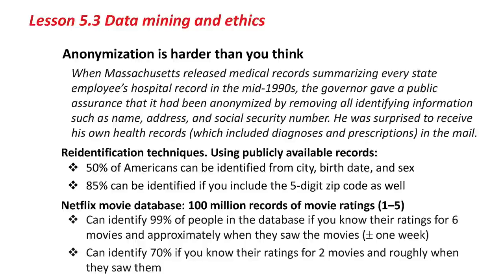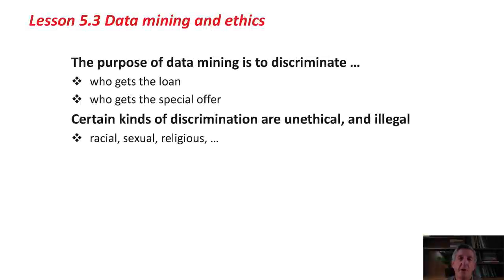Re-identification is remarkably powerful, and it is incredibly hard to anonymize data effectively in a way that doesn't destroy the value of the entire data set for mining purposes. Of course, the purpose of data mining is to discriminate — that's what we're trying to do. We're trying to learn rules that discriminate one class from another in the data: who gets the loan, who gets a special offer. Of course, certain kinds of discrimination are unethical, not to mention illegal. For example, racial, sexual, and religious discrimination is certainly unethical and, in most places, illegal.